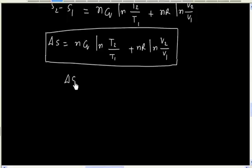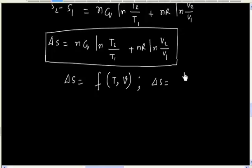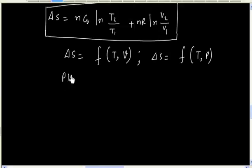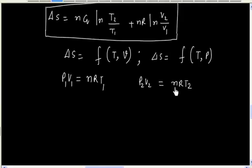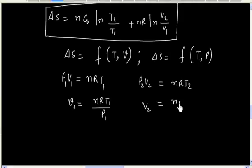This total change in entropy is a function of temperature and volume. We want to calculate total change in entropy as a function of temperature and pressure, so we need to eliminate volume. Applying the ideal gas equation: P1V1 equals nRT1 and P2V2 equals nRT2. From here, V1 equals nRT1 divided by P1, and V2 equals nRT2 divided by P2.